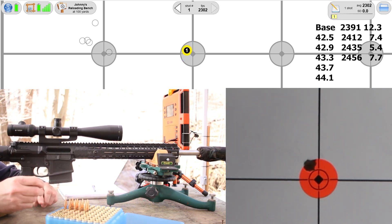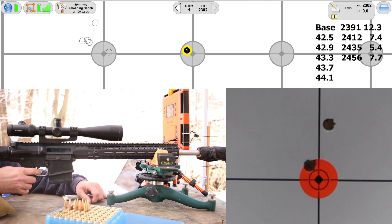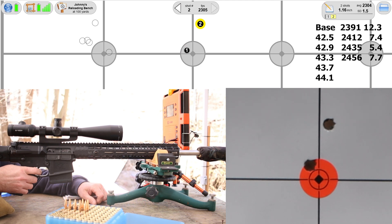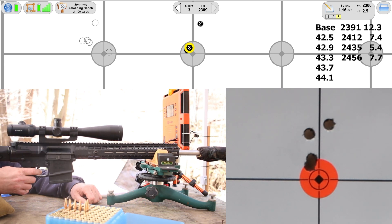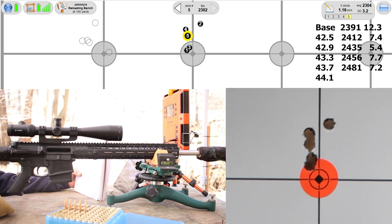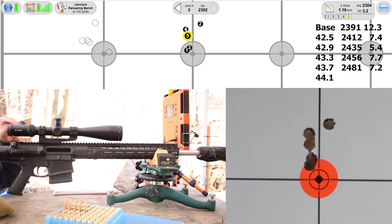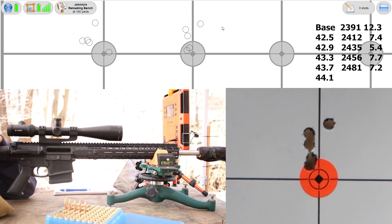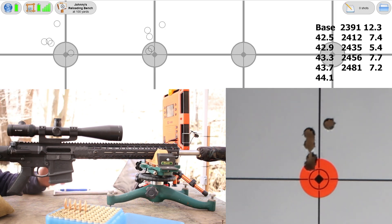43.7 is next. First piece of brass looks okay. Velocity is 2481, standard deviation 7.2, extreme spread 19, and another group that's a little over an inch. This is frustrating. I wish I had five more shots of that Varget load because I can't help but question myself, question the gun - what's going on, why is this happening? I feel like I'm shooting good today. At least these SD numbers are incredible. The brass still looks fine.